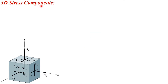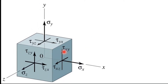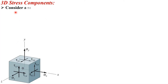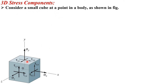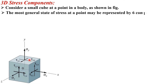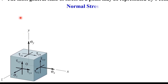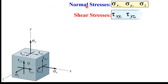Let us start with the 3D stress components. Here we are going to consider a figure to understand the components for the 3D stress. Let us consider a small cube at a point in a body — assume the dimension of this cube is very small. The most general state of stress at a point may be represented by six components: three normal stresses and three shear stresses.